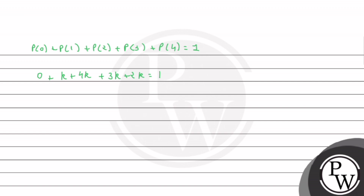And finally, it will be 10k = 1, and k will be 1/10. So this is our value. This is the answer to the first part.